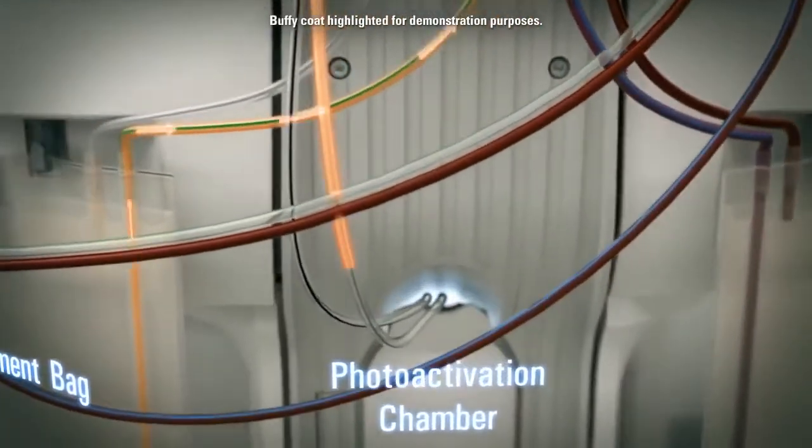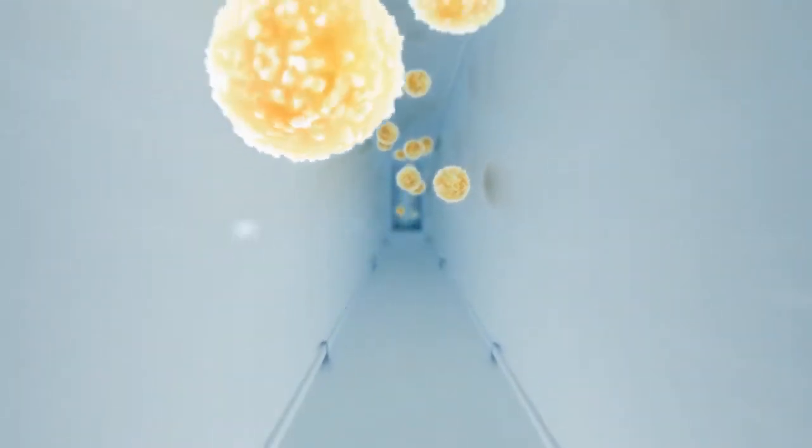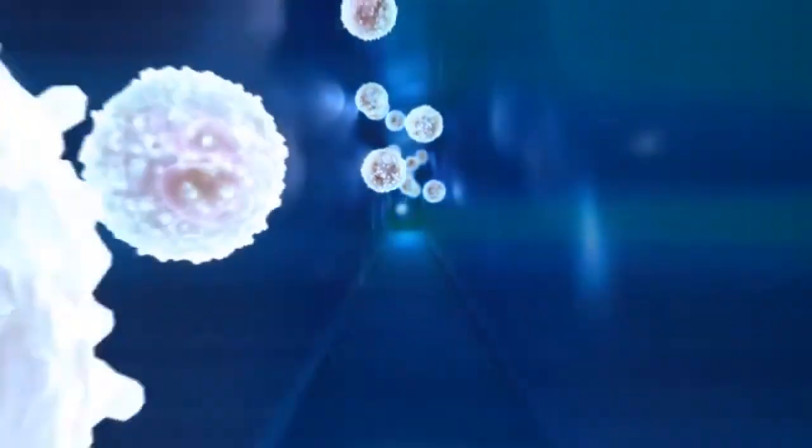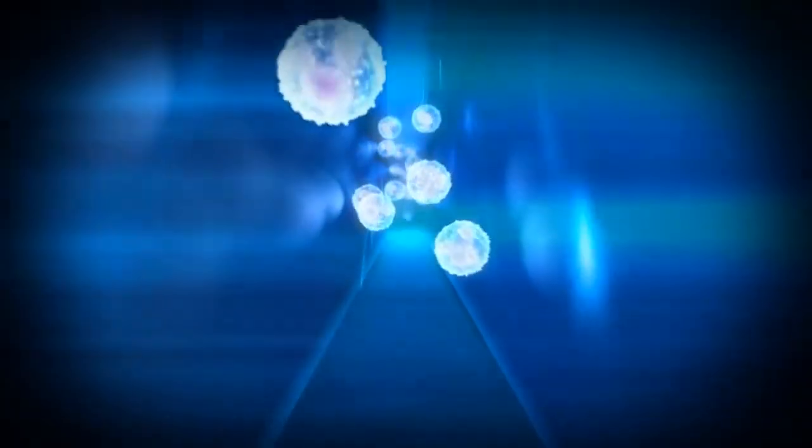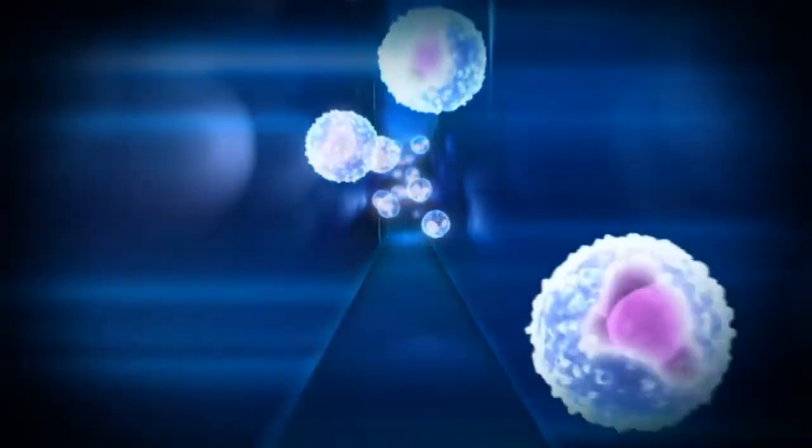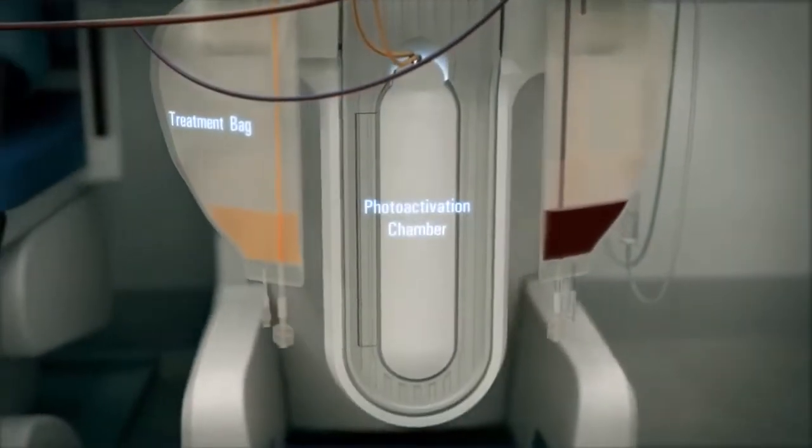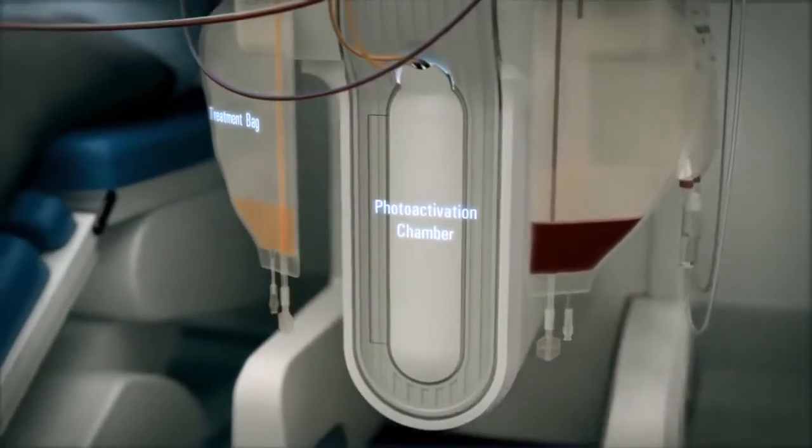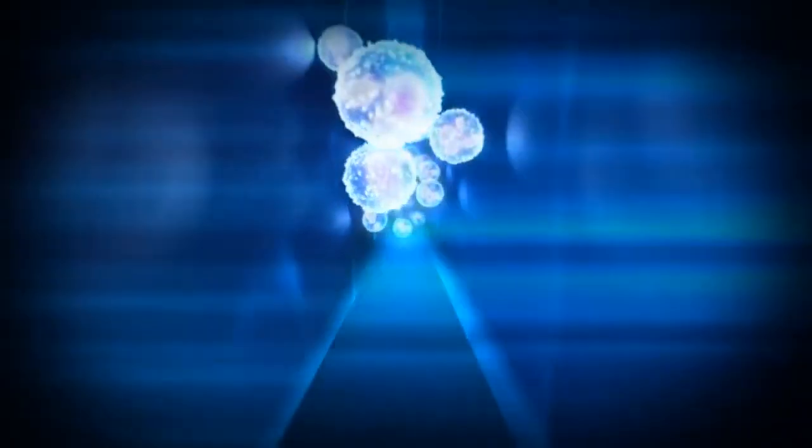Recirculation begins as the treated buffy coat passes into a photo plate which has been designed to provide consistent treatment of leukocytes with continuous recirculation. The cells are treated with approximately 1.5 to 2 joules per centimeter squared of ultraviolet A UVA light which activates the methoxalin and causes it to permanently bind to the DNA, programming the cell for death.